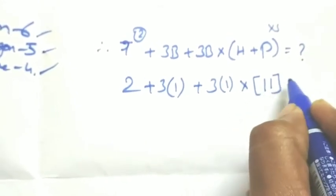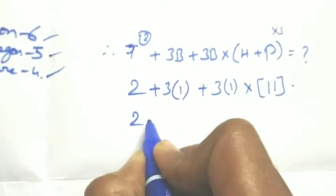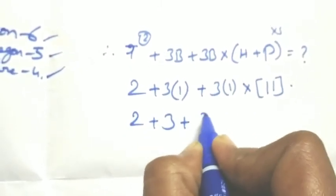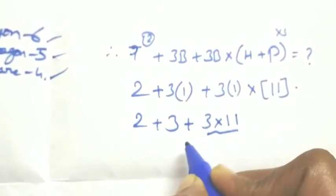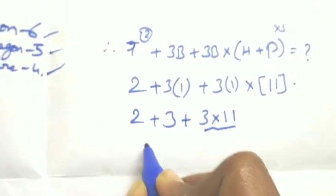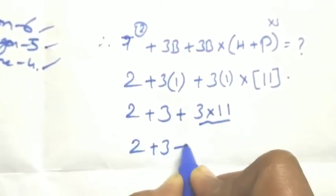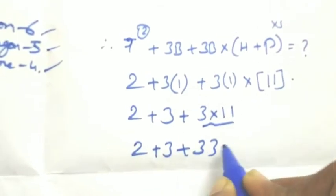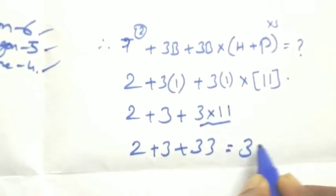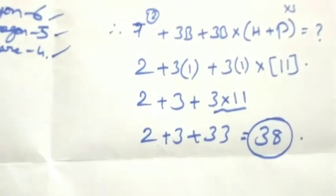So 2 plus 3 plus 3 times 11. Apply the BODMAS rule - first you should multiply, so 2 plus 3 plus 33. Add all those: 38 is the answer for our puzzle.